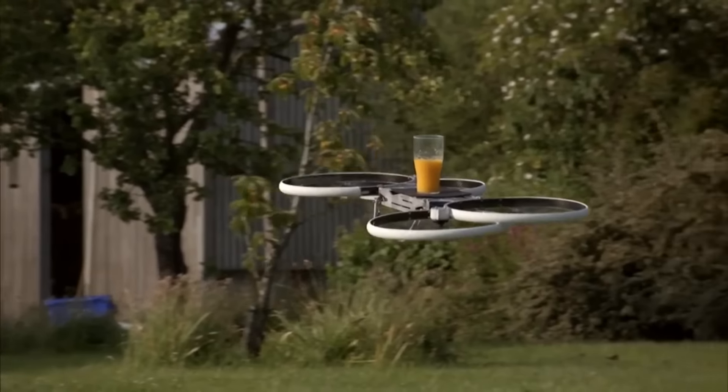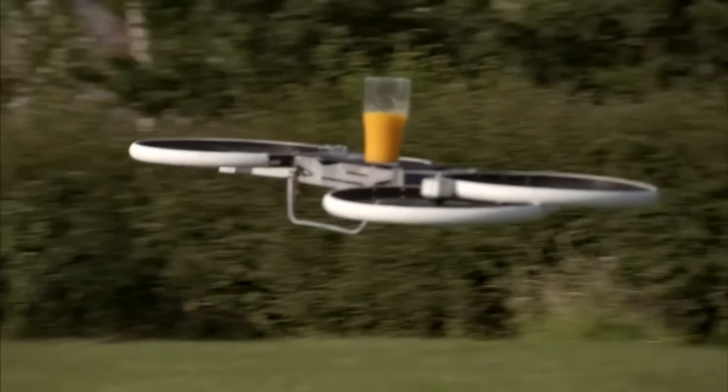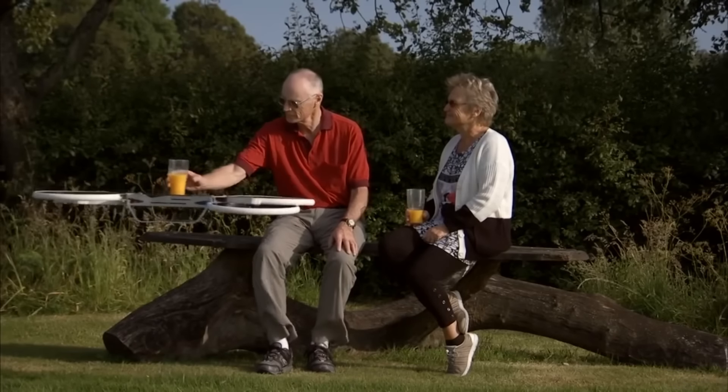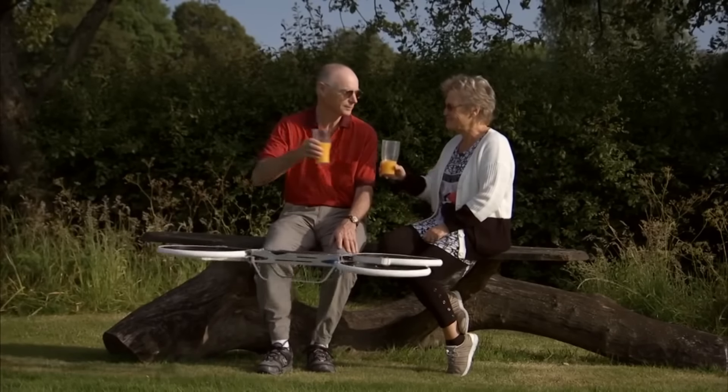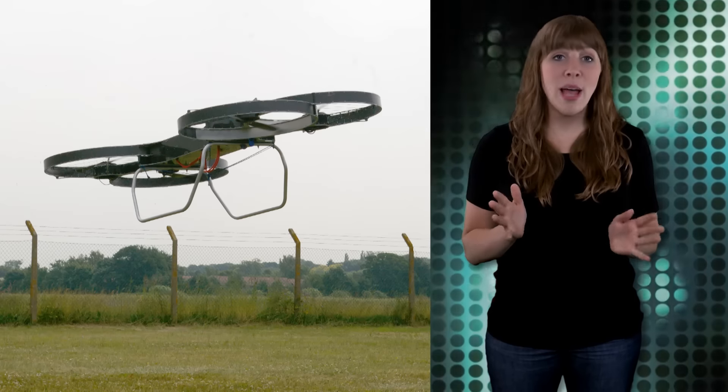The smaller drone version, which is available to consumers, uses electric motors and is controlled with a standard RC helicopter controller. The full-size hover bike uses a fly-by-wire system and a throttle exactly like those on motorcycles.